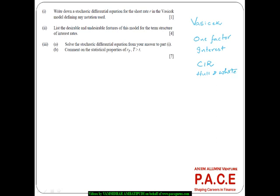Vasicek is a popular single-factor model, which means it uses one single interest rate to typically model the short-term interest rates. The stochastic differential equation for this model is drt = a(μ - rt)dt + σdBt. This is the typical general form of the Vasicek model, where the short-term interest rate rt follows a mean reversion behavior.